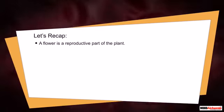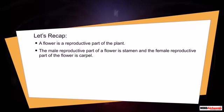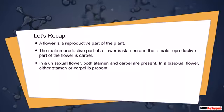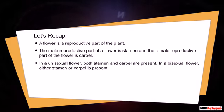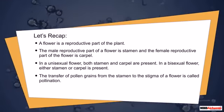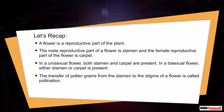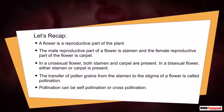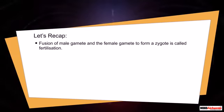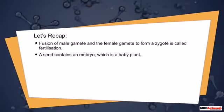Let's recap. A flower is the reproductive part of the plant. The male reproductive part of a flower is the stamen and the female reproductive part is the carpel. In a unisexual flower, either stamen or carpel is present. In a bisexual flower, both stamen and carpel are present. The transfer of pollen grains from the stamen to the stigma of a flower is called pollination, which can be self-pollination or cross-pollination. Fusion of the male gamete and the female gamete to form a zygote is called fertilization. A seed contains an embryo, which is a baby plant.